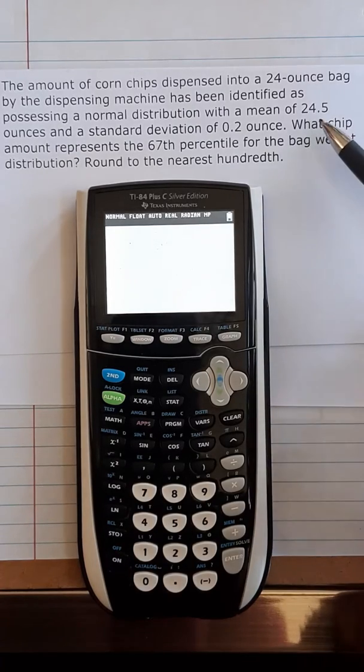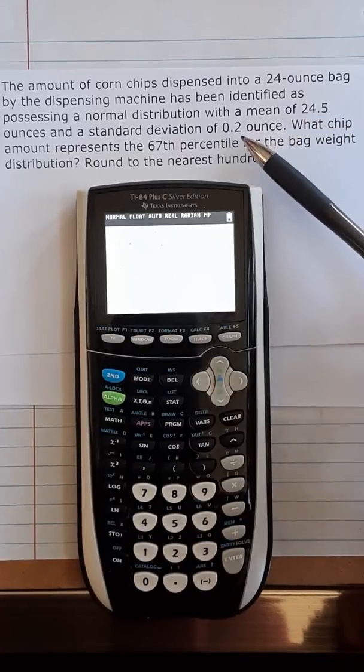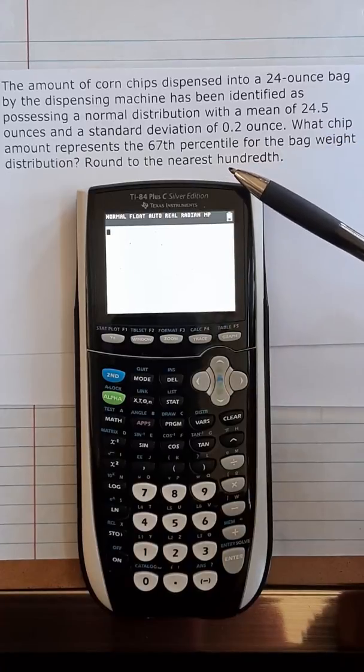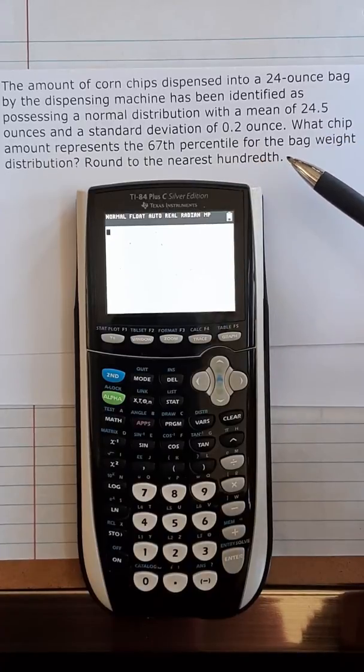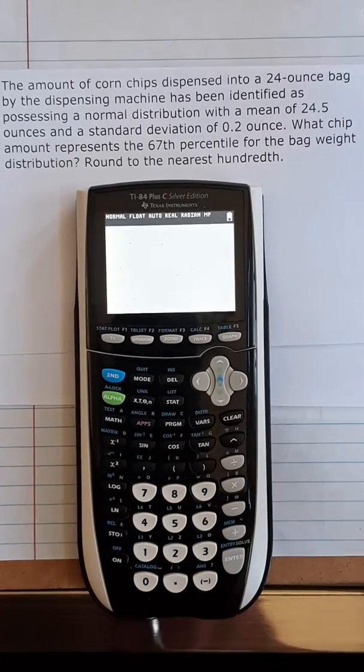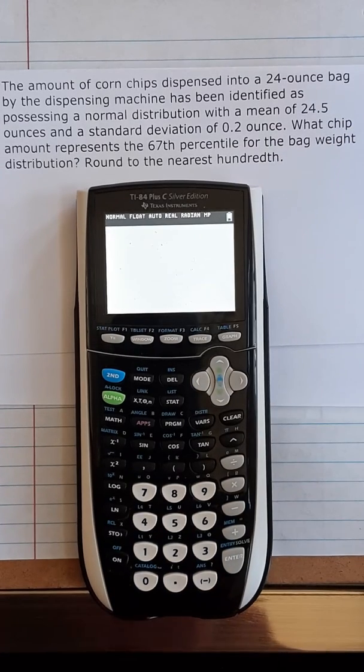With the mean of 24.5 and standard deviation of 0.2 ounces. What chip amount represents the 67th percentile for the bag weight distribution? So 67th percentile, and so area is actually given.